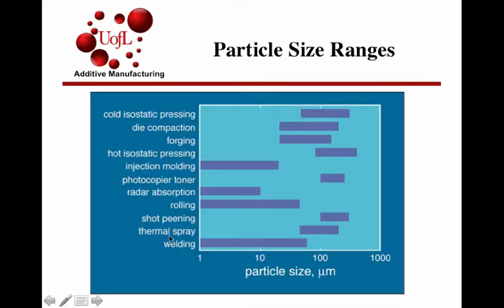This map is a plot of traditional processes that have used metal powders. On the y-axis are the typical particle sizes used for each process. One thing evident from this plot is that there is a preferred particle size range for any given manufacturing method. This is no different for 3D printing.